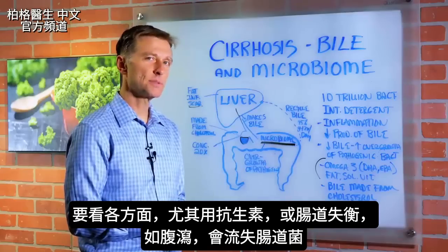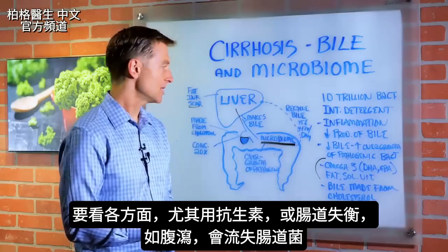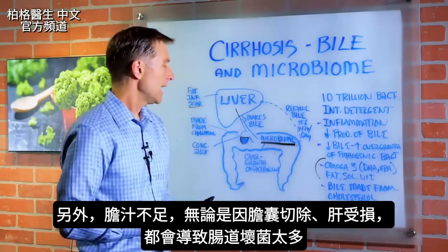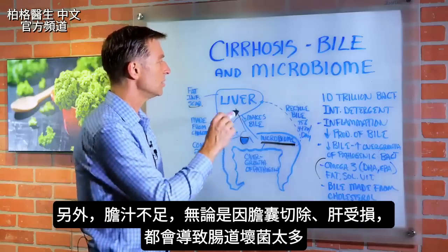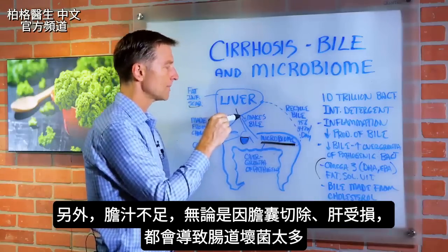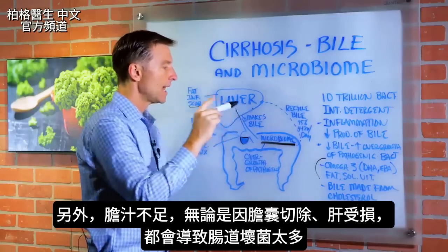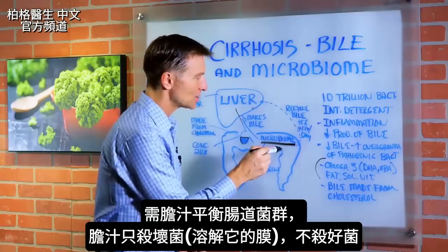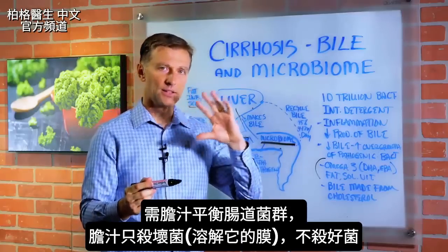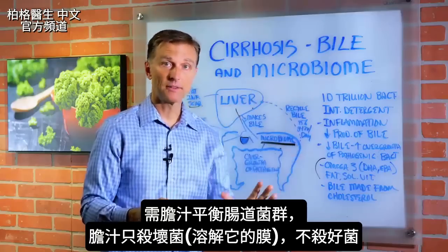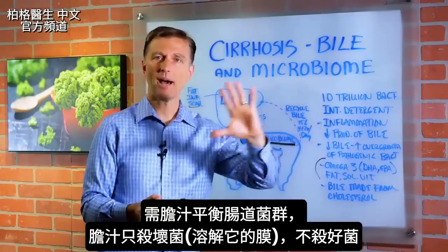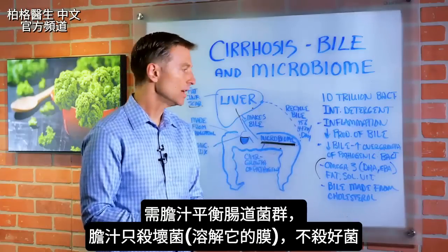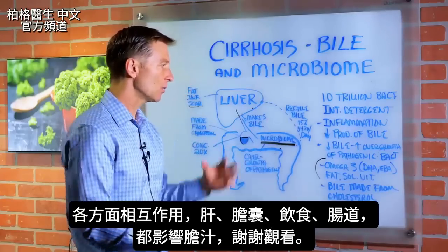So we want to look at all the different aspects, especially after antibiotics, or if you have some type of imbalance like diarrhea and you've lost that microbe. Also, if you don't have enough bile — either because you don't have a gallbladder or because the liver's damaged — that alone can create an overgrowth of pathogenic bacteria in the gut. We need the bile to balance out this microbial life. It doesn't seem to interfere with the good bacteria, only the bad bacteria — it will actually kill off and dissolve the outer shell of the bad bacteria.